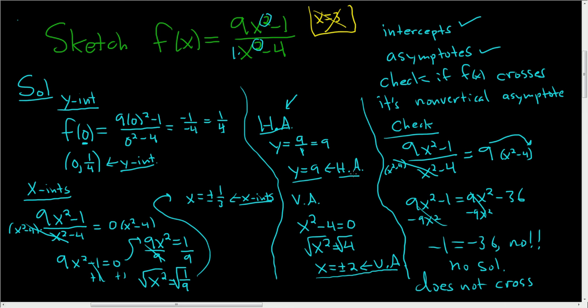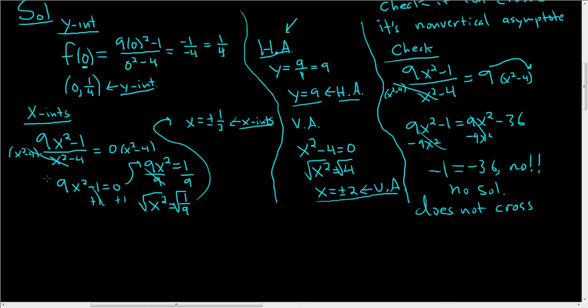Alright, let's go to our picture. So I'm going to scroll down and write everything down again. We have the y-intercept at 0 comma 1 fourth. We have the x-intercepts at x equals plus or minus 1 third. We have the horizontal asymptote at y equals 9. And we have the vertical asymptotes: x equals 2 and x equals minus 2. Let's go ahead and do our graph now.